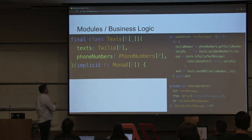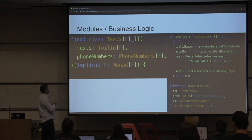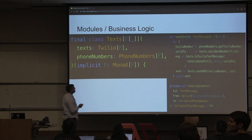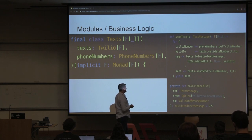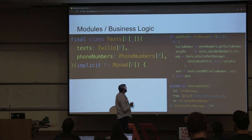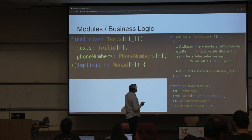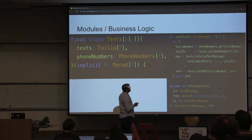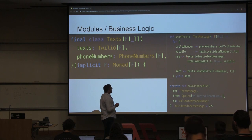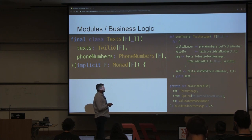We also have a second module for texts. It depends on Twilio and on our phone numbers trait. F will also be a Monad. It has a little helper method that takes a text message with from and to numbers, makes sure these are valid phone numbers, and turns it into a validated text message. The main method takes an unvalidated text message, uses the phone numbers repository to get a Twilio number, validates the recipient number so we don't just get an error from Twilio, turns it into a sendable text message, and uses our Twilio repository to actually send it.